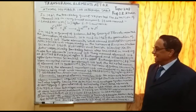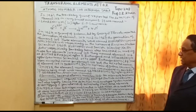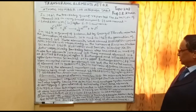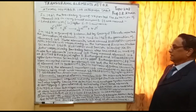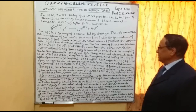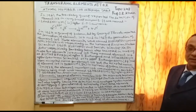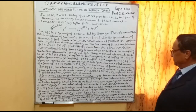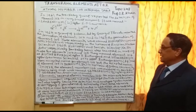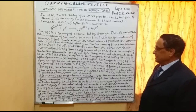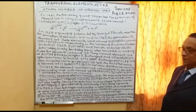In 1974, element number 106 was produced at Berkeley Laboratory and was named Seaborgium (Sg), after Glenn T. Seaborg, an American chemist. This brought the confirmed synthesis of elements up through atomic number 106.